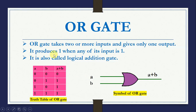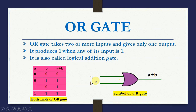It produces 1 when any of its inputs is 1 — either A or B — and when both inputs are 1. When both inputs are 0, the output is 0. The symbol of OR gate takes 2 inputs A and B and the output is A plus B. We can have more than 2 variables as well.